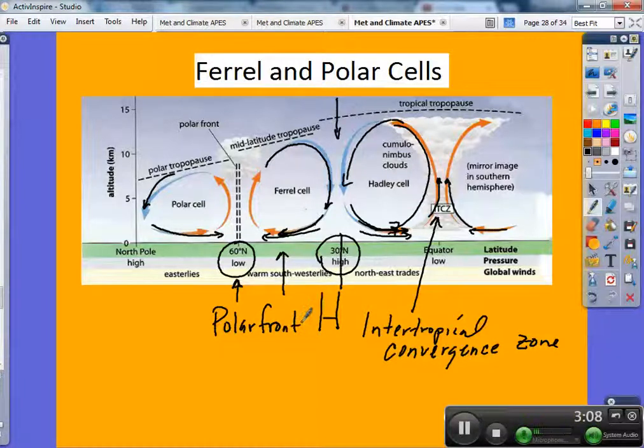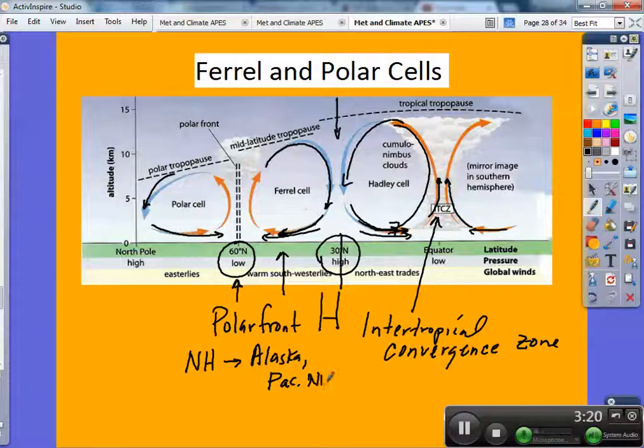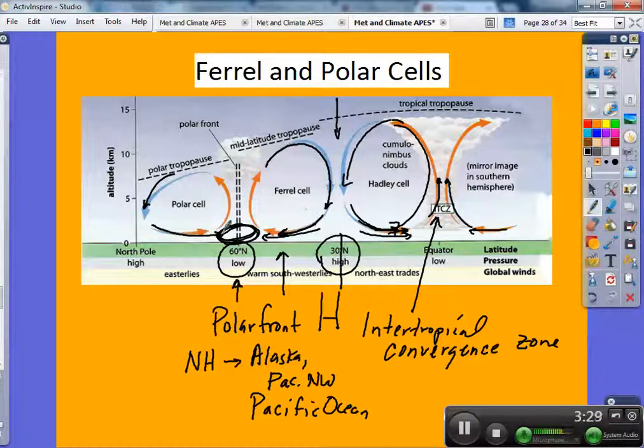The poles have really cold air descending upon the poles and then it goes towards this convergence area at 60 degrees north. 60 degrees north is another low pressure area. This is what's known as the polar front. The polar front in the northern hemisphere's wintertime is located near Alaska and the Pacific Northwest in the Pacific Ocean. This polar front, this area in our wintertime, is where most of our low pressure systems that travel from west to east across the country are generated.